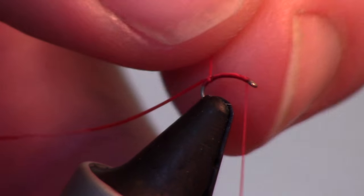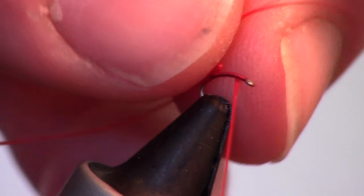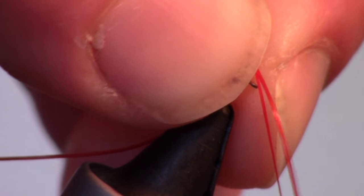Now pinch your rubber leg material and pull it up a bit. Then tie it in at the top of the fly with 2 loose wraps.